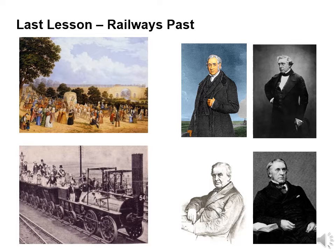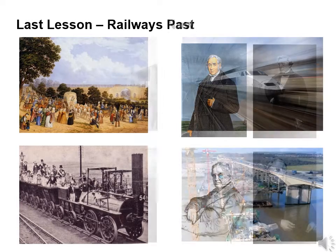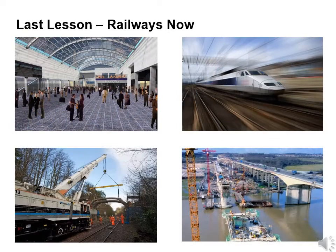We looked at the work of George Stevenson, Robert Stevenson, Charles Vignolo and Joseph Locke. In the second half of part 1, we looked at the redesign of stations to accommodate more passengers and larger trains. We looked at electrification and the subsequent infrastructure requirements. We also looked at high speed rail vehicles and associated infrastructure.